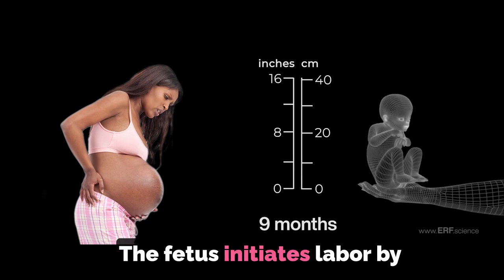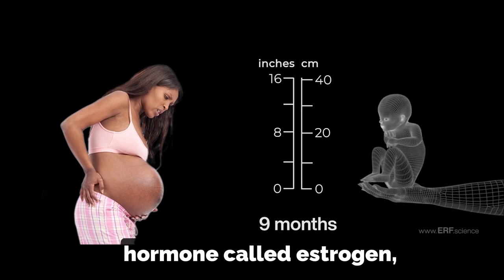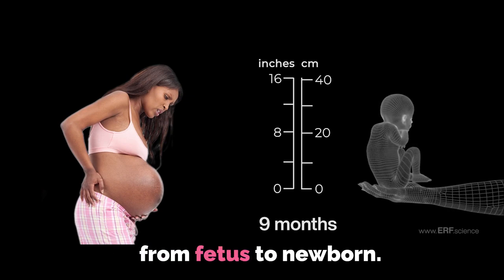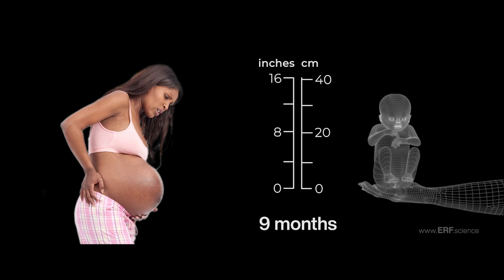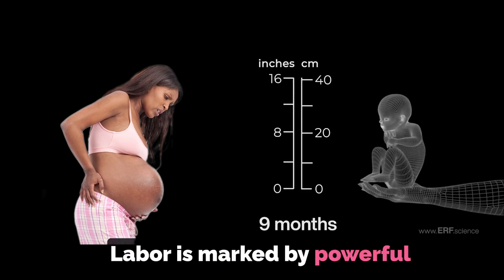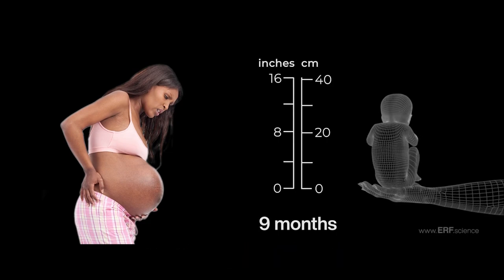The foetus initiates labour by releasing large amounts of a hormone called oestrogen, and thus begins the transition from foetus to newborn. Labour is marked by powerful contractions of the uterus, resulting in childbirth.